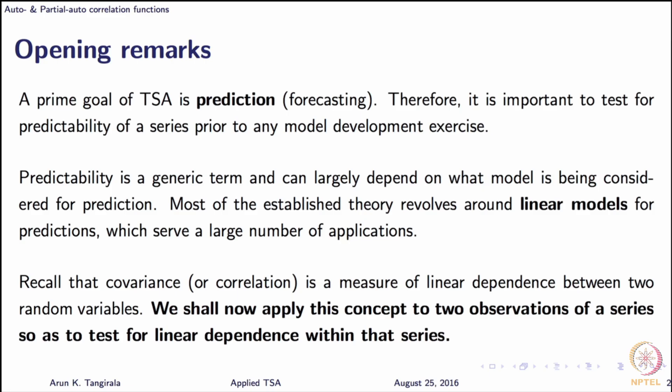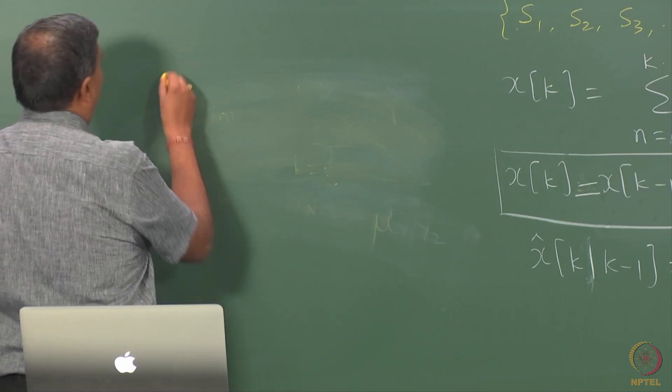In other words, we are going to work with covariances. We have already seen that covariance is a measure of linear dependence. So what we have is essentially a signal, an infinitely long signal.